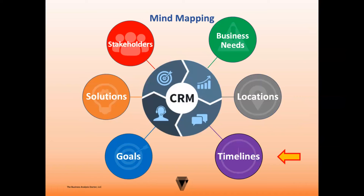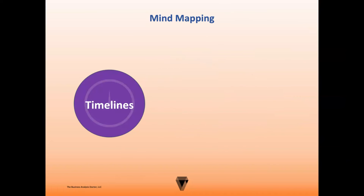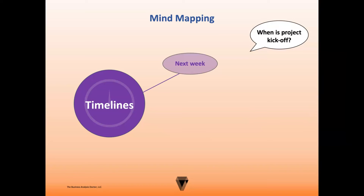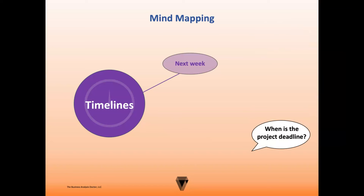Now let's look at the timelines node. This is where we ask our when questions. So you may ask questions related to the project timelines, such as, 'When is the project kickoff?' Here we'll say the project kickoff is next week. If you're provided with an exact date, that's what you'll use as the keyword. You should also ask, 'When is the project deadline?' Here we'll assume a 90-day project timeline. But again, if you have the exact date, that's what you want to use as the subtopic.